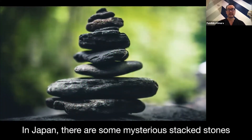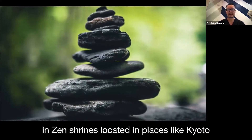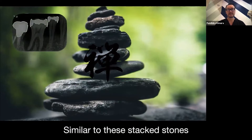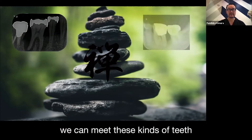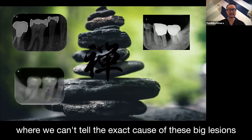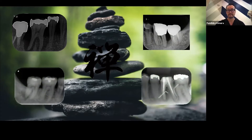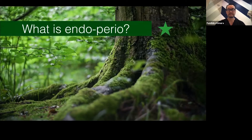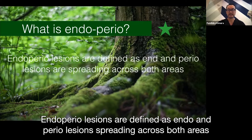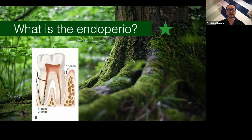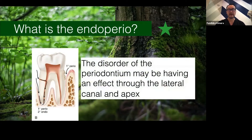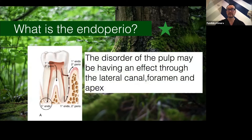In Japan, there are some mysterious stacked stones in shrines located in places like Kyoto. Similar to these stacked stones, we can meet these kinds of teeth where we cannot tell the exact cause of the big regions. Endopelio regions are defined as endo and perio regions spreading across both areas. The disorder of the periodontium may have an effect through the lateral canal and apex, and the disorder of the pulp may also have an effect through the lateral canal and apex.